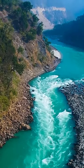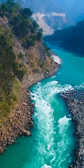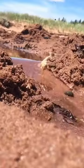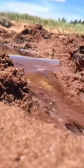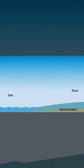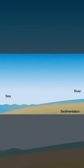Rivers travel long distances, which causes a lot of erosion, and they end up carrying sediments. As they approach the coast, their speed slows down and they start to deposit the sediments, forming very fertile lands called a delta.